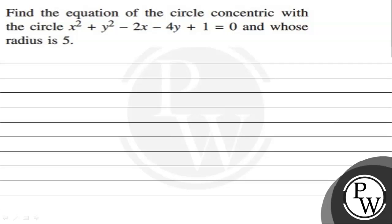Hello, let's read the given question. The question states: find the equation of the circle concentric with the circle x² + y² - 2x - 4y + 1 = 0 and whose radius is 5.